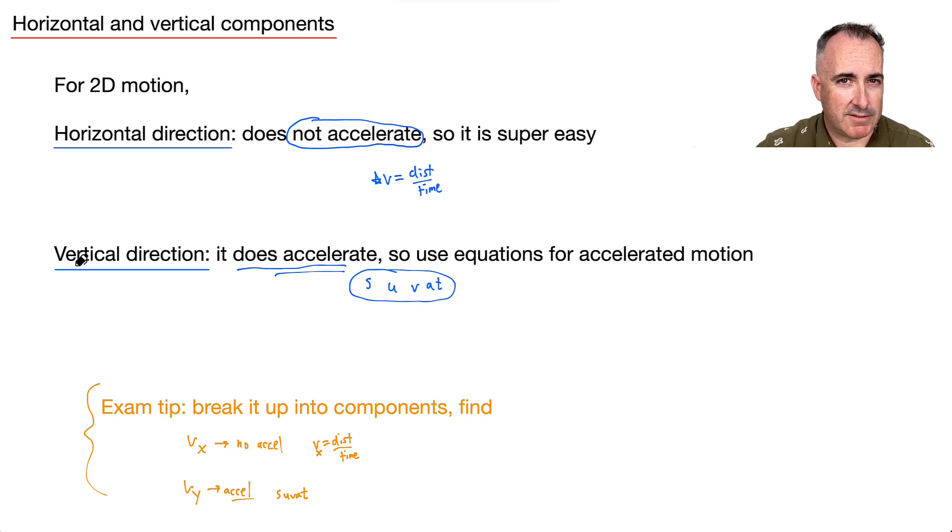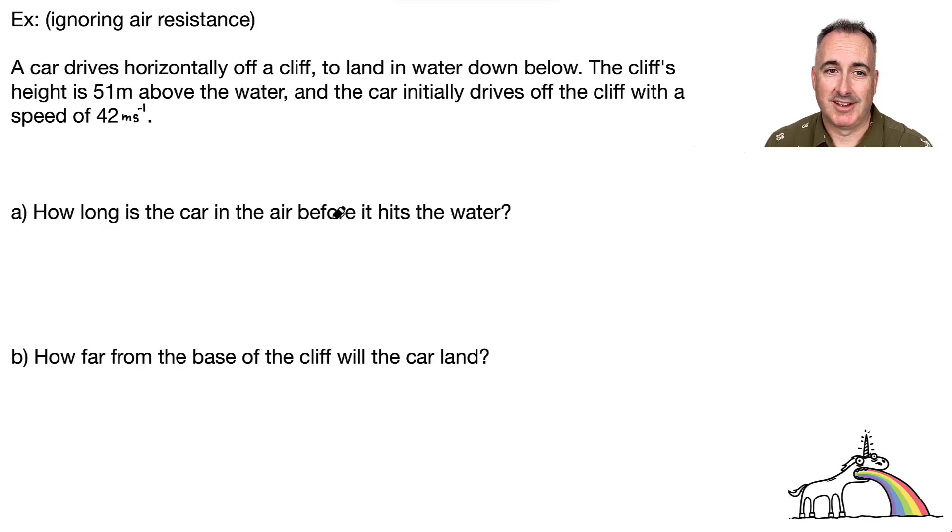So let's do an example. The example I want to give you is a less complicated one. We don't need to break up into components, but we're still going to consider horizontal and vertical. We're going to have a situation where you're just launched off a cliff but horizontally. If you draw this cliff and you're landing into some water, this car is going to be launched actually horizontally. It goes horizontally off a cliff to land in water down below. The cliff's height is 51 meters above the water. The car initially drives off the cliff with a speed of 42 meters per second.